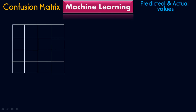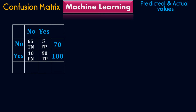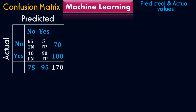This is my confusion matrix. We have No and Yes on both axes. If I plug in the values: 65 plus 5 will be 70, and 10 plus 90 will be 100. Similarly, 65 plus 10 will be 75, and 5 plus 90 will be 95. The summation will be 170. These are my predicted and actual values. In the vertical axis, we have the predicted values.